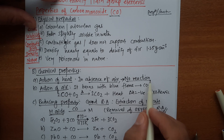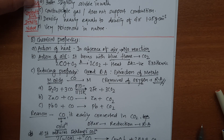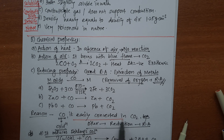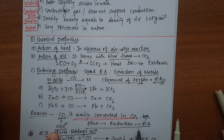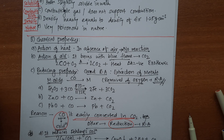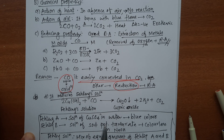So to summarize the chemical properties: action of heat — in absence of air, it does not decompose, no reaction. Action of air — it is easily converted into CO₂, burns with a blue flame, exothermic reaction. Reducing property — it acts as a good reducing agent because it easily converts into CO₂; it reduces metal oxides, Fehling's solution, and iodine pentoxide.